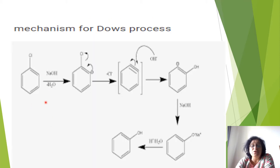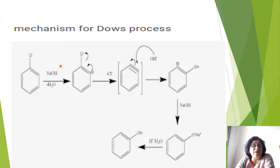Mechanism of Dow's process: chlorobenzene is the substrate. NaOH dissociates to give Na⁺ and OH⁻ ions. These OH⁻ ions approach the ring, first approaching the ortho position. The hydrogen on the ortho carbon combines with OH⁻, water is given out, and a negative charge is created on the ortho position.